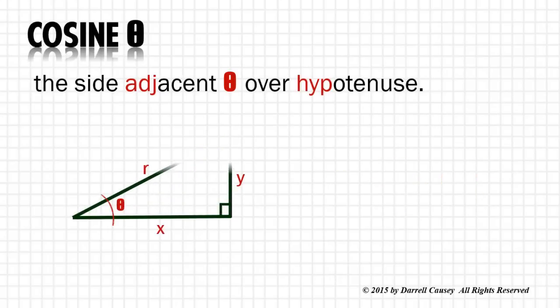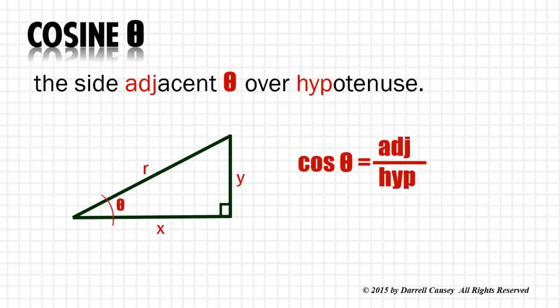Cosine is the side adjacent to theta over hypotenuse. Cosine θ is adjacent over hypotenuse, which is x over r.